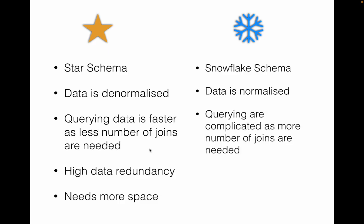In a snowflake schema the data is normalized, so the dimension tables are split into smaller tables. This means your queries will be more complex and will probably run slower. However, you have less data redundancy, data is not duplicated, and the schema requires less storage space.